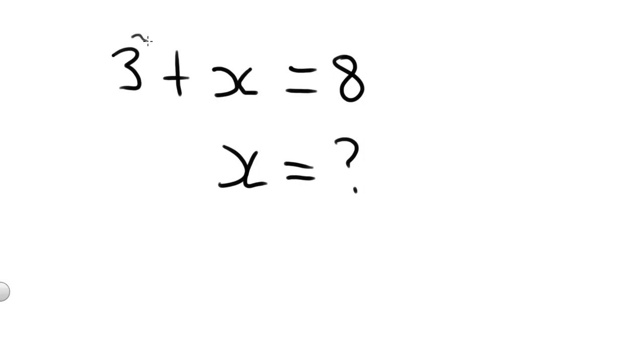For example, here we have a 3. So to get rid of that, all we have to do is subtract 3. But in algebra, whatever we do on one side, we must do on the other. So because we subtracted 3 on the left-hand side, we must also subtract 3 on the right-hand side.